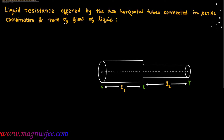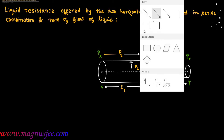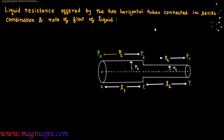R1 is the radius of the first tube XZ of length L1, and R2 is the radius of the other tube ZY. PX and PZ are the pressures at ends X and Z of the tube XZ, and PY is the pressure at end Y of the tube ZY. P1 and P2 are the pressure differences acting across the two ends of the two pipes.